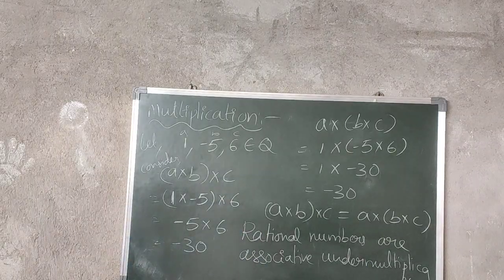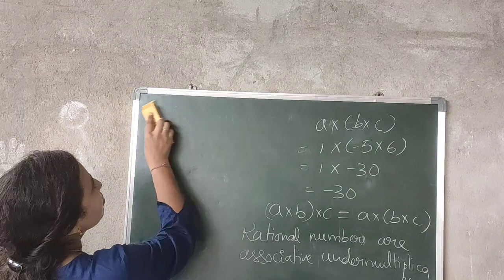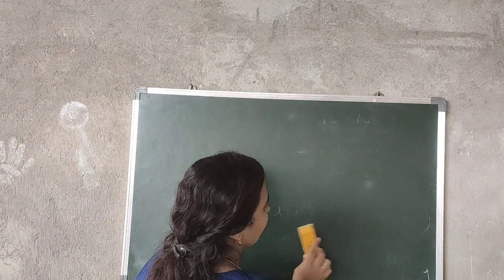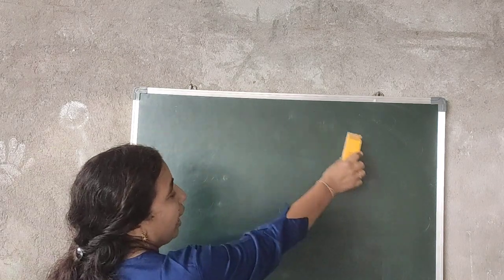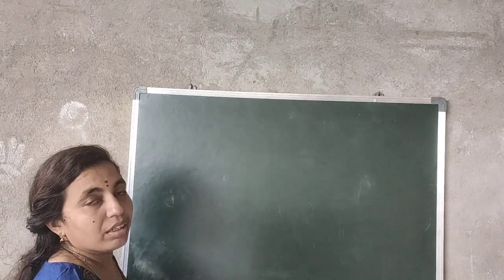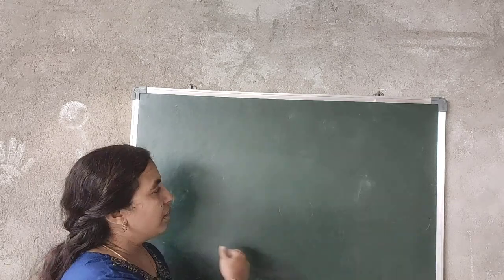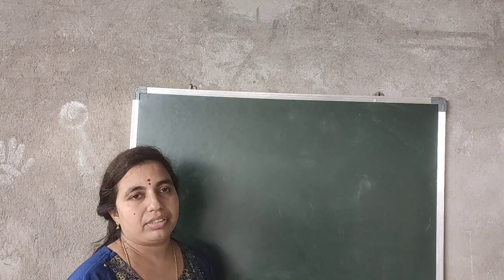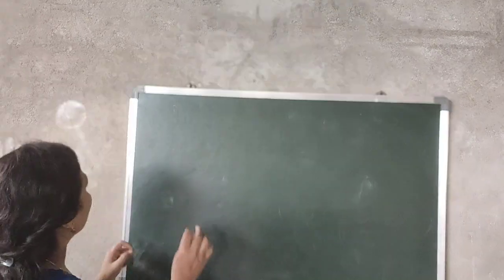Now the last operation: division. Everything on the board needs to be written in your field notes. Don't watch without writing — keep your notes and write all the content.